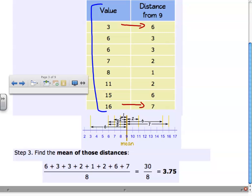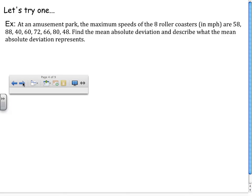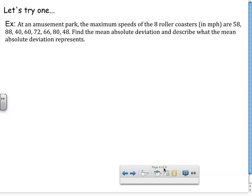So let's put that to action. Let's see how it works if we have this example. Let's say, at an amusement park, the maximum speeds of the 8 roller coasters in miles per hour are 58, 88, 40, 60, 72, 66, 80, and 48.